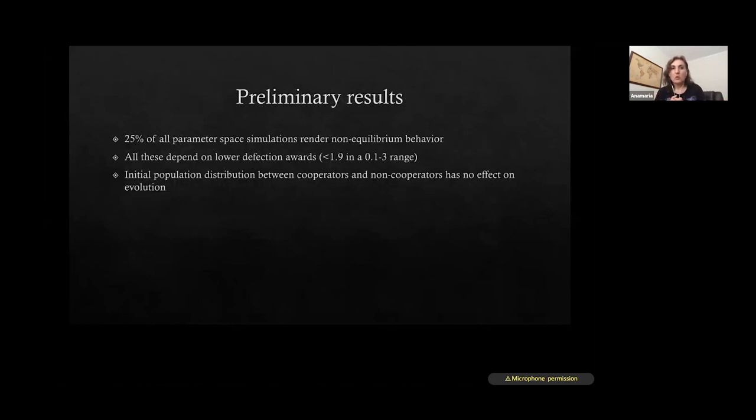So some of our preliminary results showed that within a full parameter space simulation, in 25% of the cases will render non-equilibrium behavior. So again, most of them render the system to become extinct. But in 25% of the cases, they don't. So we can observe this constant evolution inside the system. And what we also observed so far is that all these depend on lower defection award. So if we have a high defection award in this parameter space, then they will lead again to extinction. So there has to be an internal propensity within these artificial entities to have a low defection award. So not to be incentivized for defection, for competition.